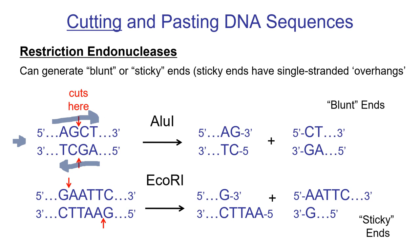AluI always cuts between the G and the C on both sides, cutting right down the middle — giving us what are known as blunt ends. We split the DNA into two parts, and you can see that on the right of the diagram. Now look at the second enzyme, EcoRI — named for E. coli, where it was discovered. EcoRI makes a cut that's offset. We don't get blunt ends; we get something called sticky ends, which will make more sense in just a second.